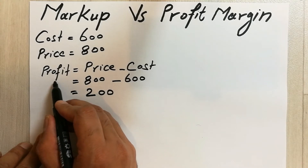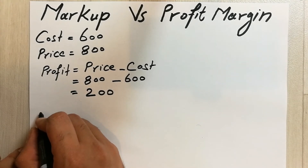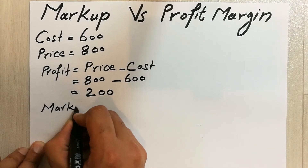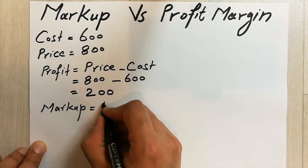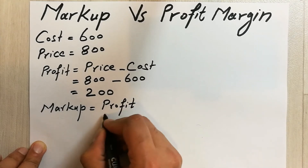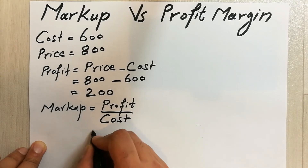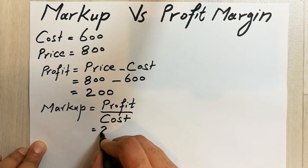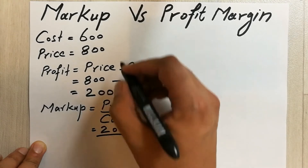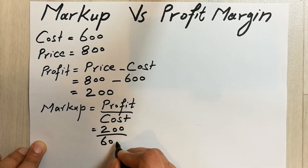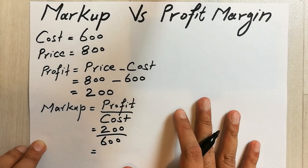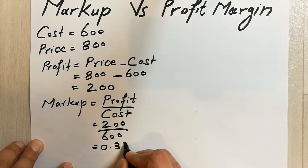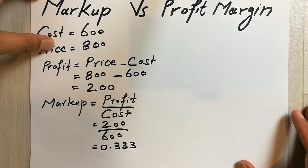Now we will put the formula for markup. The formula for finding out the markup is profit divided by cost. We already found the profit, which is 200, and our cost is 600. So 200 divided by 600 gives us 0.333.